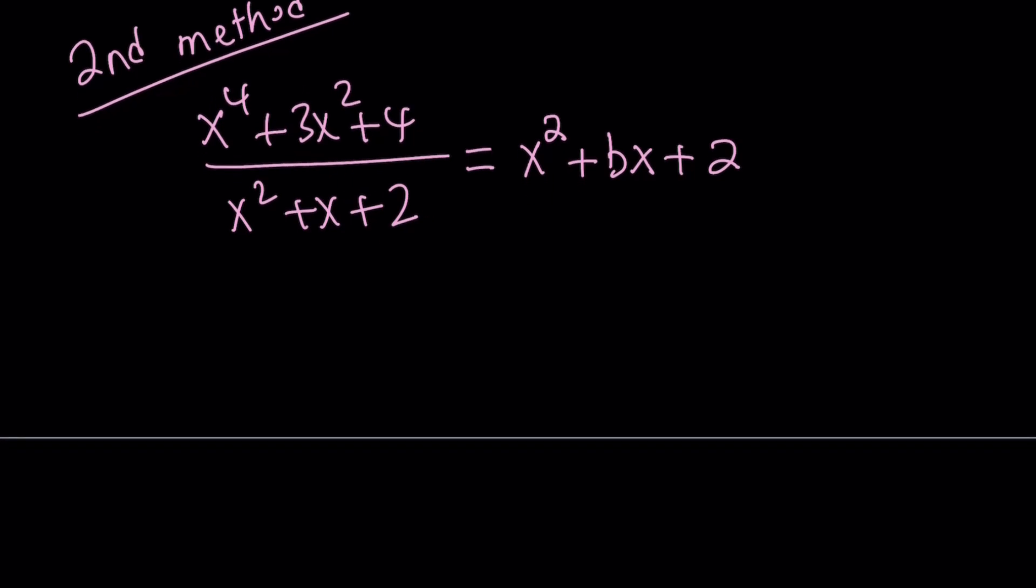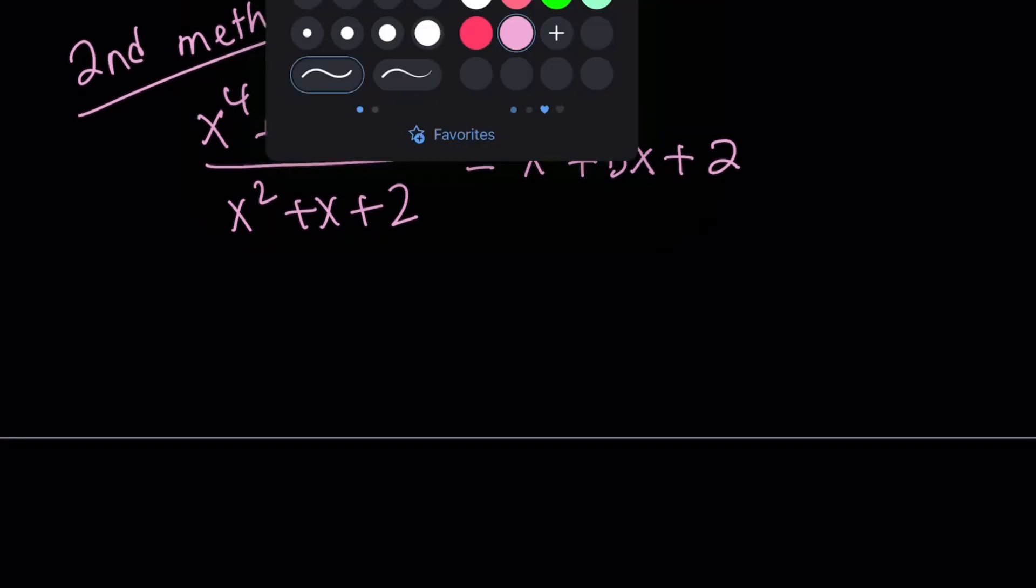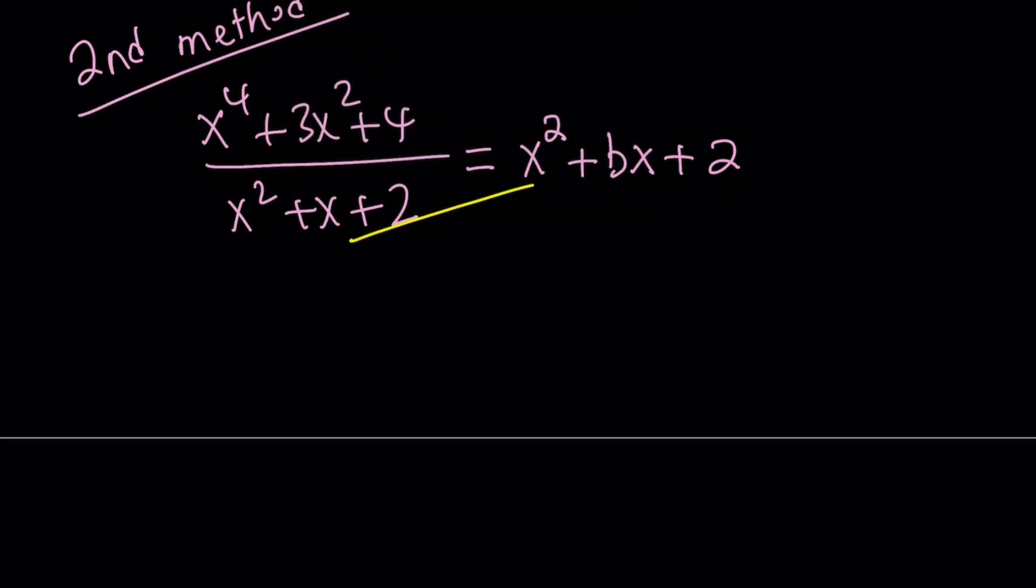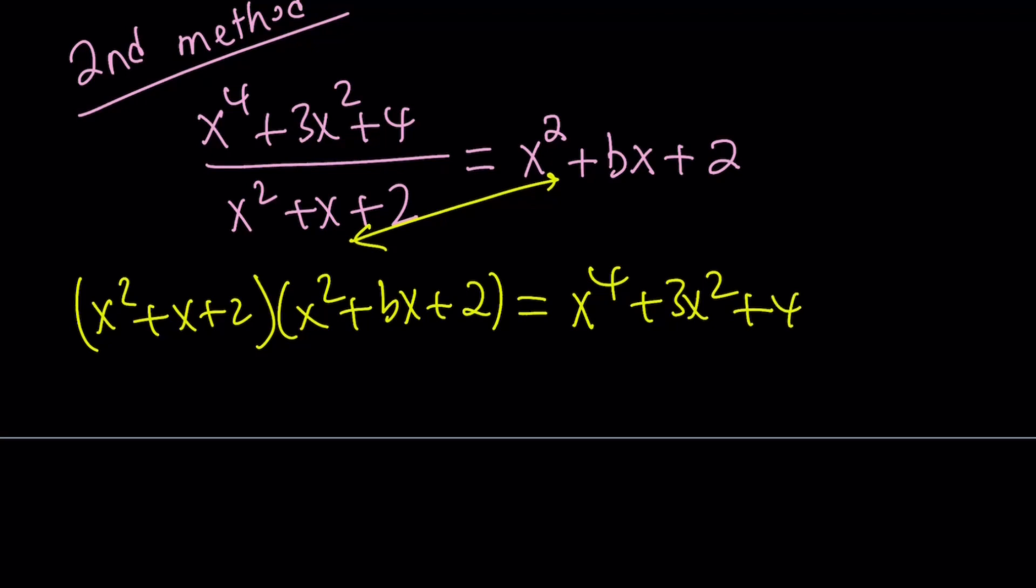Now we're going to go ahead and cross-multiply. We're going to set these two, and let's see what we get from here. x squared plus x plus 2 multiplied by x squared plus bx plus 2 is supposed to equal x to the 4th plus 3x squared plus 4.